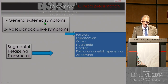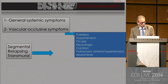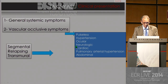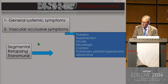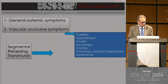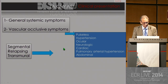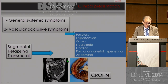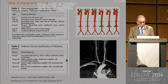Takayasu will give an initial phase with general systemic symptoms — malaise, arthralgias, and other nonspecific symptoms — and then an occlusive phase where you will have vascular occlusive symptoms. Depending on the vessel that is occluded, you will have different symptomatology. It is interesting that Takayasu, and also giant cell arteritis, are segmental, relapsing, and transmural in pathology — which reminds me a lot of Crohn's disease, which is also segmental, relapsing, and transmural, and is in a way an autoimmune disease.